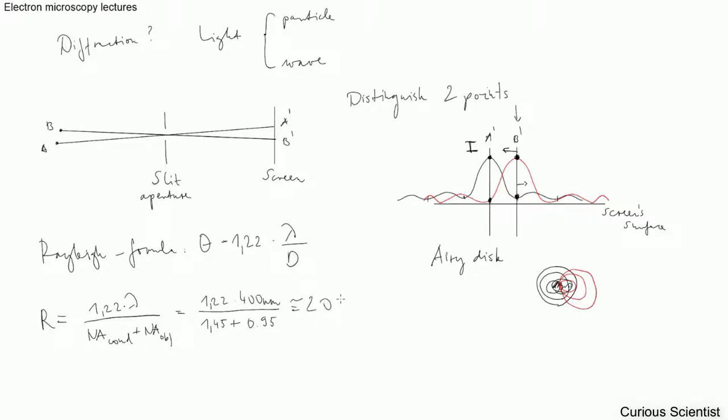Let's say we are using the possible lowest wavelength for the light, which is 400 nanometers, just for the sake of simplicity. Then we can use some numbers from textbooks for the two objectives. These are the ideal or optimal values. This yields 203 nanometers. So basically if the distance between the two objects is equal or larger than this, we can resolve them. Otherwise they will merge into each other.